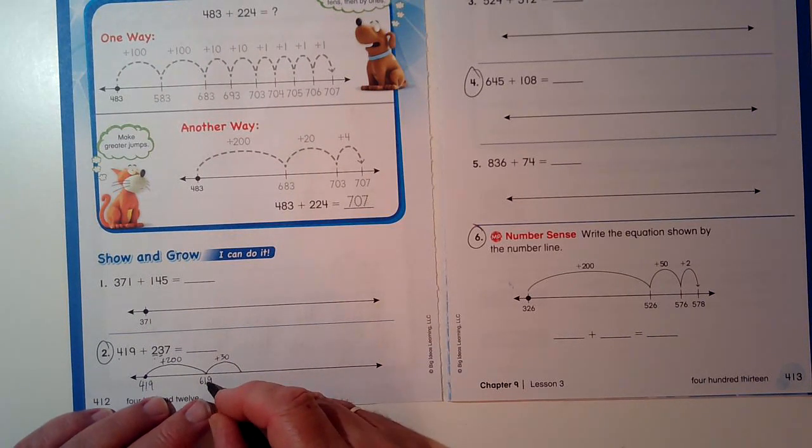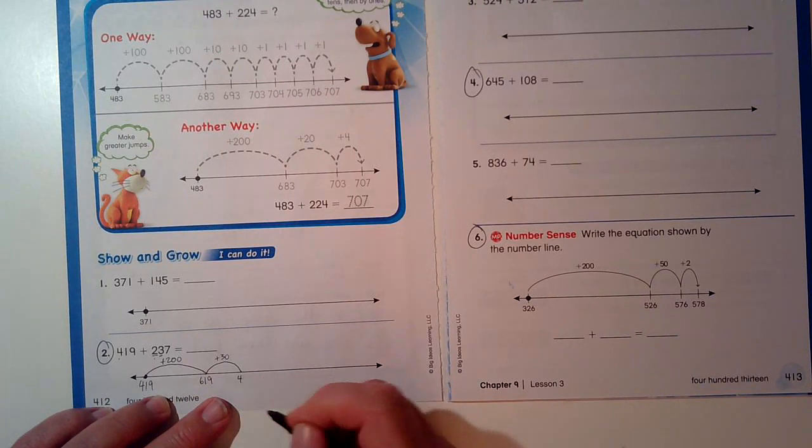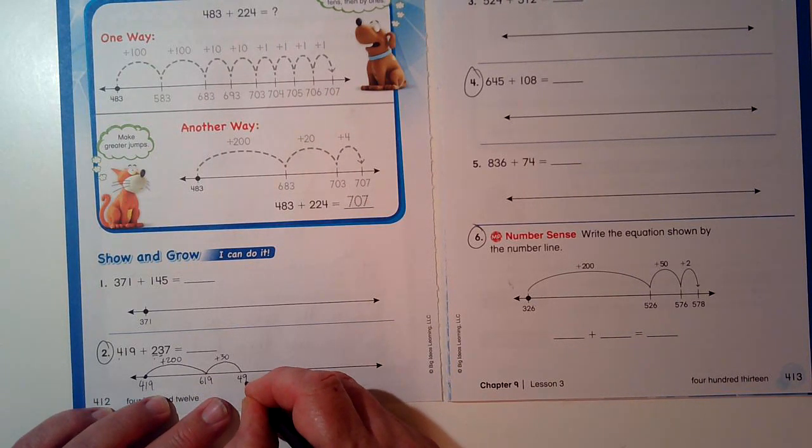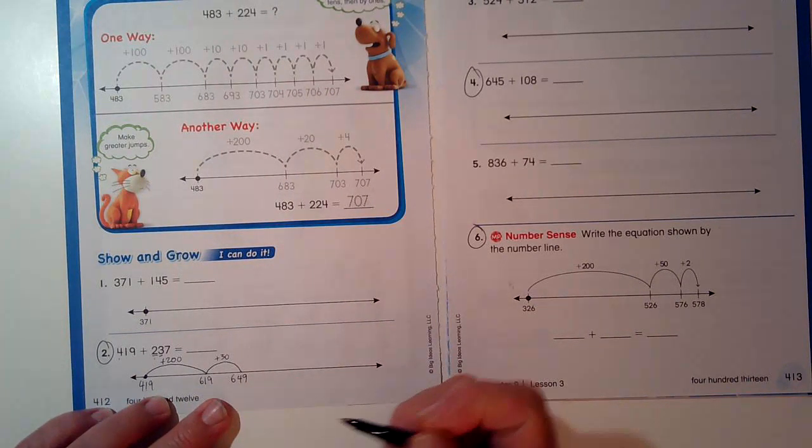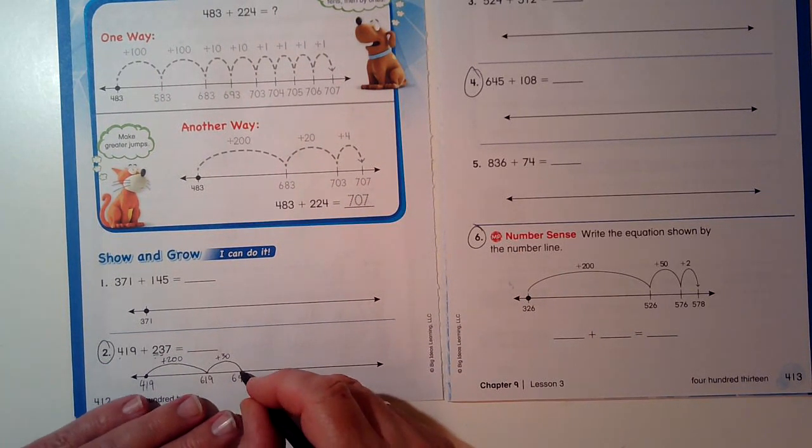Okay? Three sets of ten plus one set of ten makes four sets of ten. There's my ones, and there's my hundreds. I didn't change anything in those.